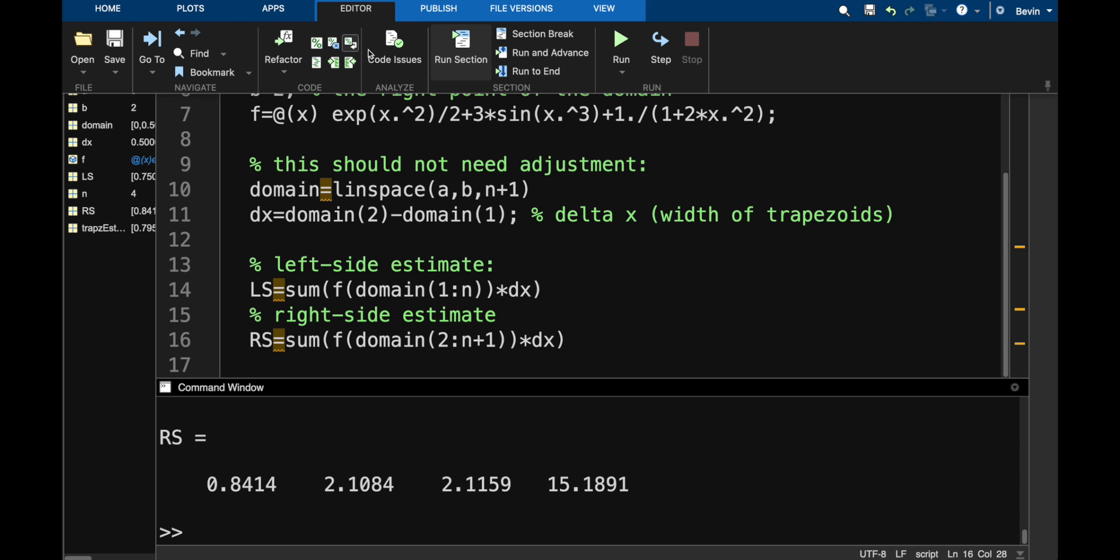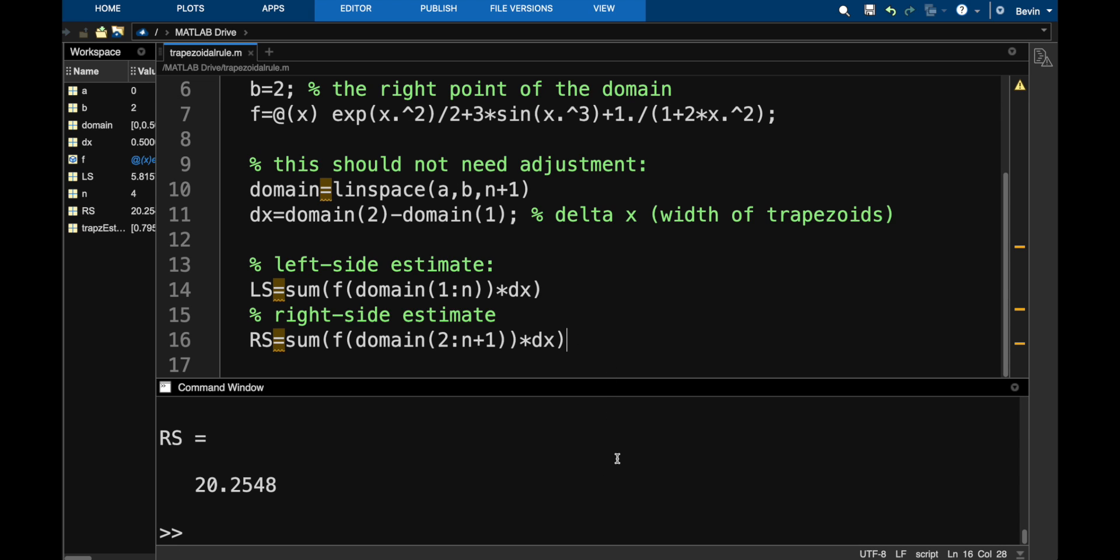So I'm going to say add up all of the entries in these vectors. This should produce just a number. Alright, so with four subintervals on this function, the left point estimate is about 5.8 and the right point estimate is about 20. So that's a pretty big discrepancy.